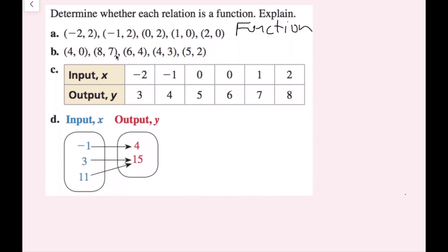For this next one, I see I have four as an input, eight as an input, six as an input, four as an input again — so that's a red flag — and then five as an input. Looking at our fours: here I have four going to zero, but here I have four going to three. Because the input four is going to more than one output, this is not a function.